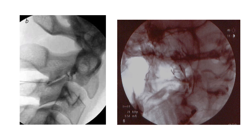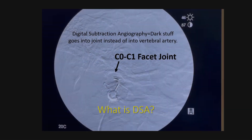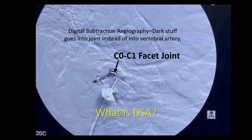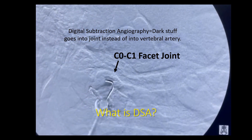On the left there, this is what a C2-3 facet injection looks like. On the right, what a C0-C1 facet injection looks like. You have to have digital subtraction angiography if you're going to be injecting C0-C1 and C1-C2, which allows the doctor to confirm that the injection isn't into the important vertebral artery. And that's what DSA looks like.